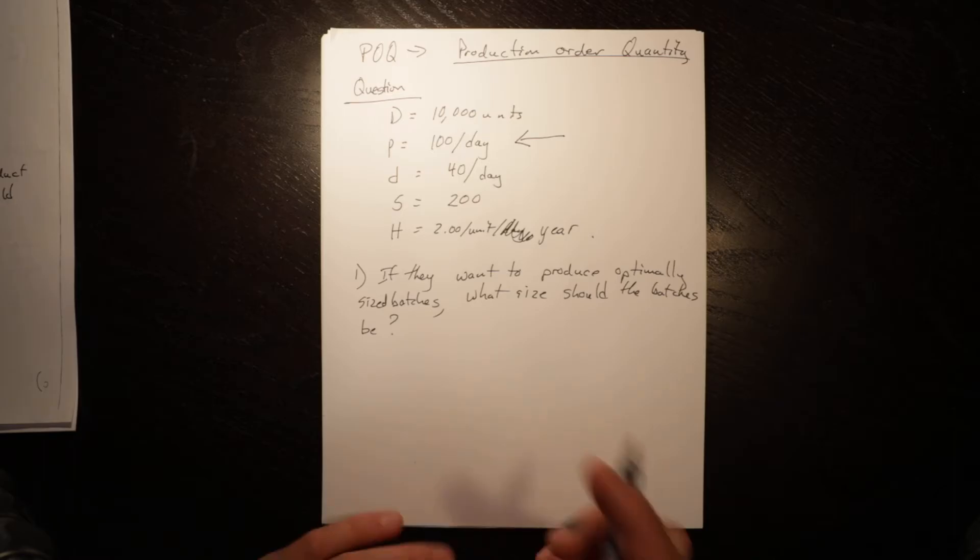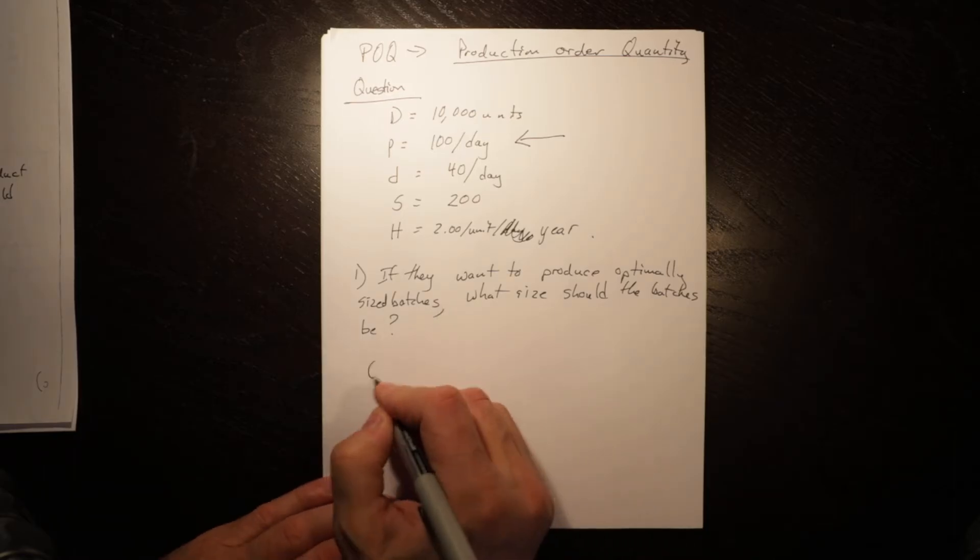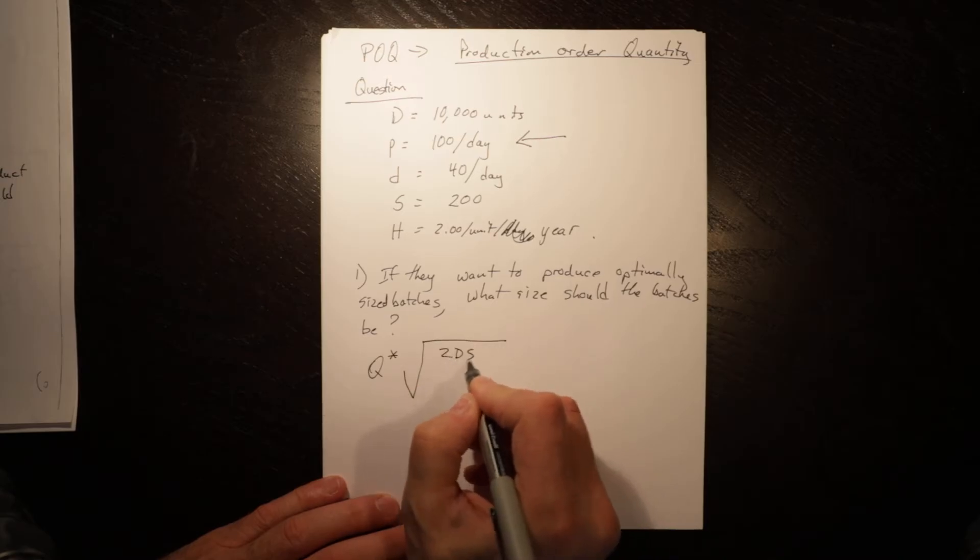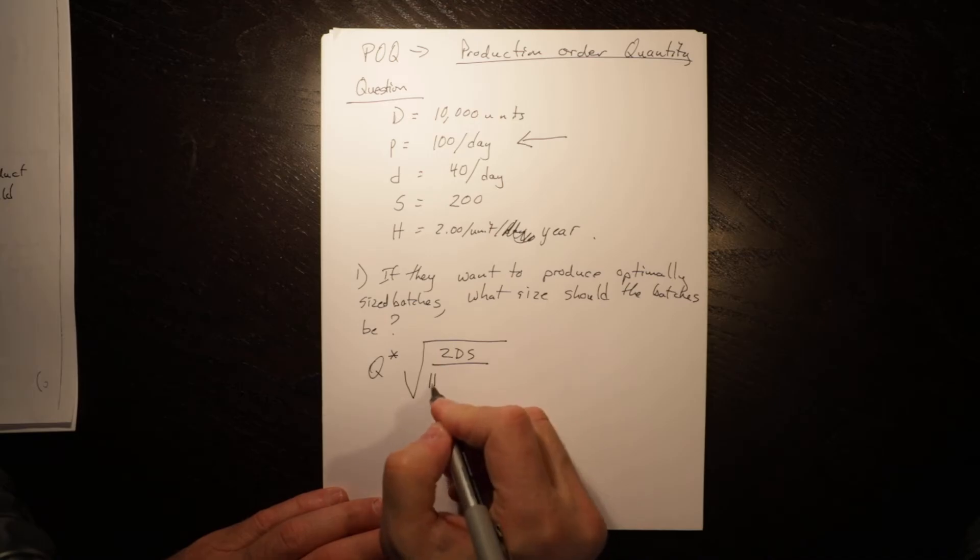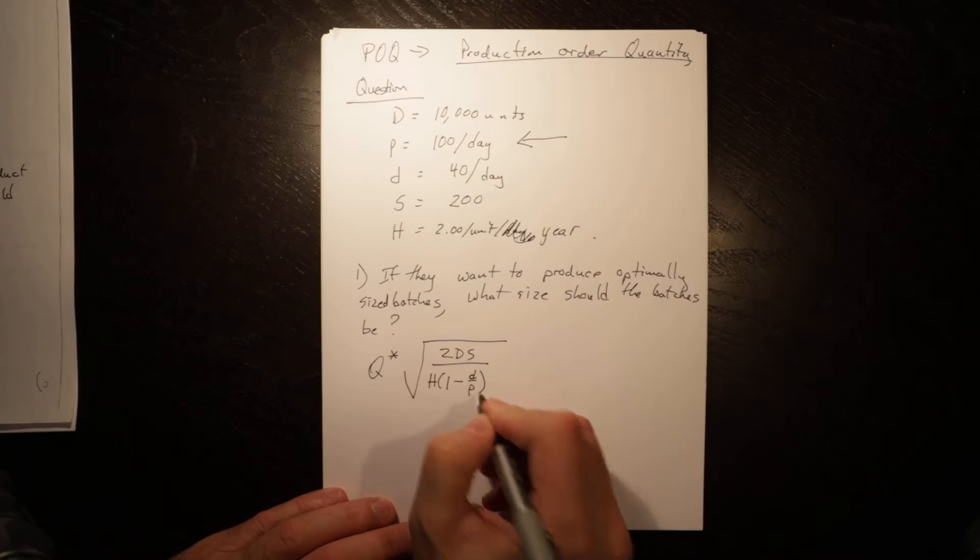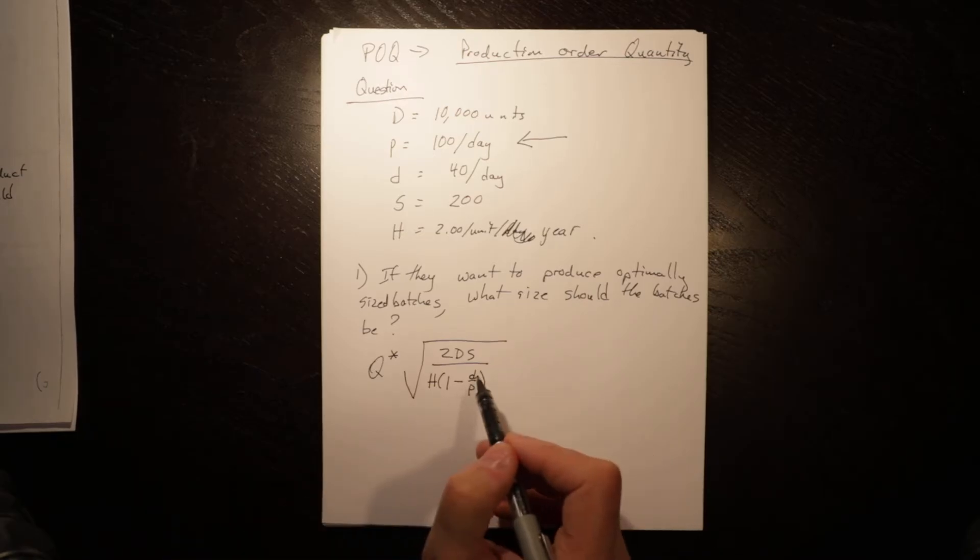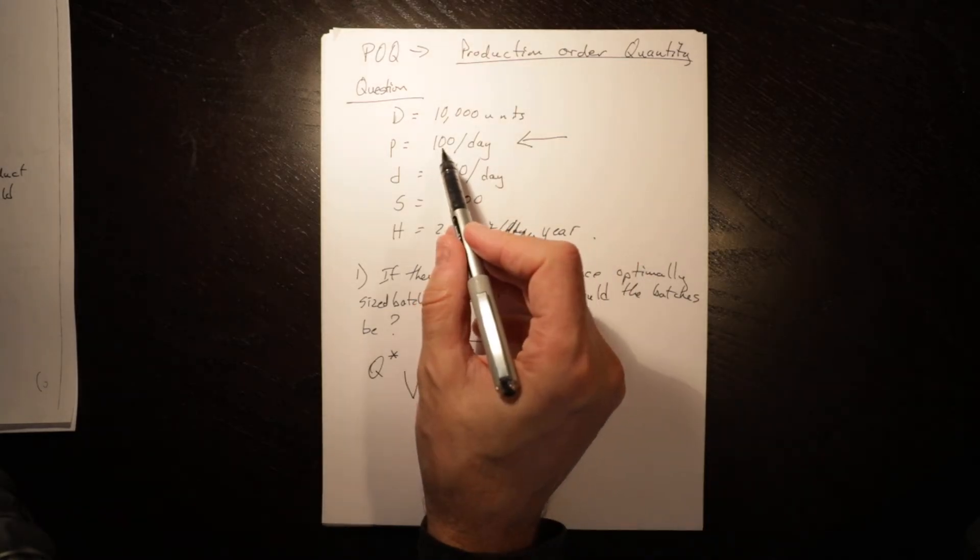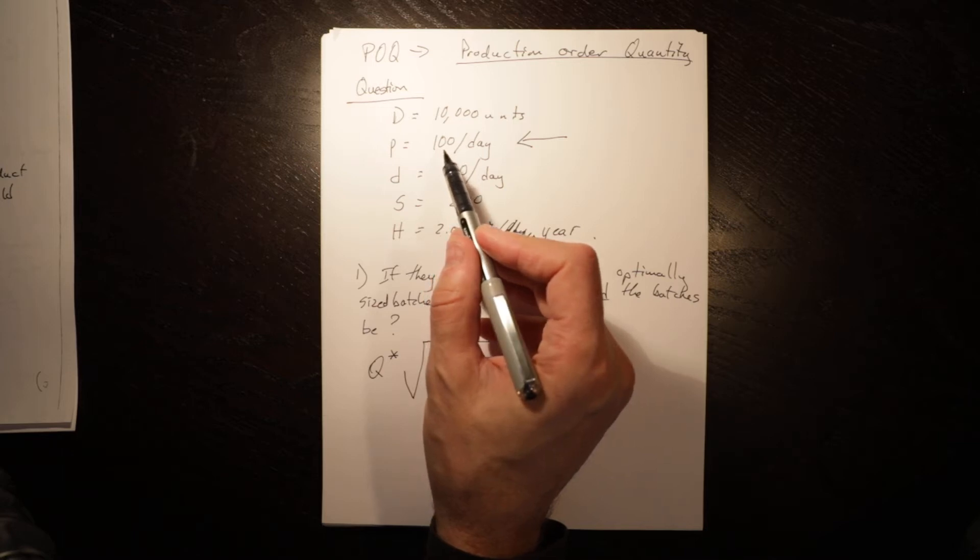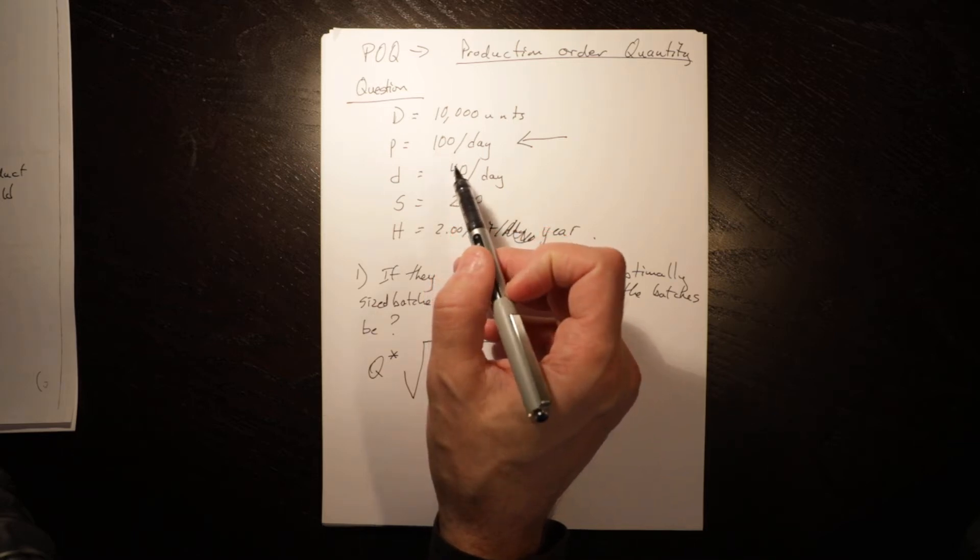So in this circumstance, the Q star is equal to the square root of 2DS. That looks a lot like the EOQ model times H, and this is where we're different: 1 minus D over P. So daily demand rate over production rate.